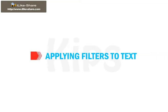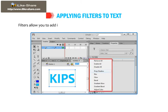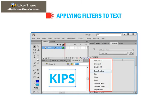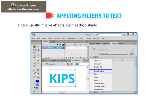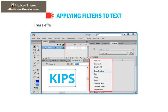Students, let us learn how to apply filters to text. Filters allow you to add interesting visual effects to text, buttons and movie clips. Filters usually involve effects such as drop shadows, blurs, glows, bevels, etc. These effects can be easily applied using the Properties panel.